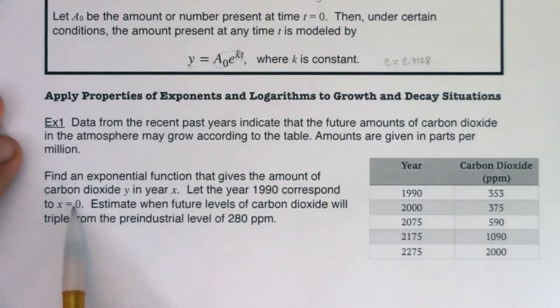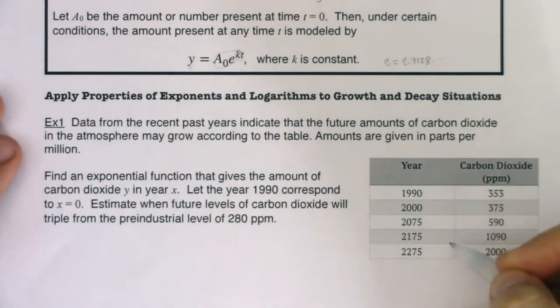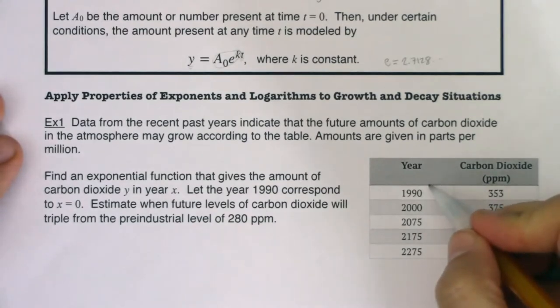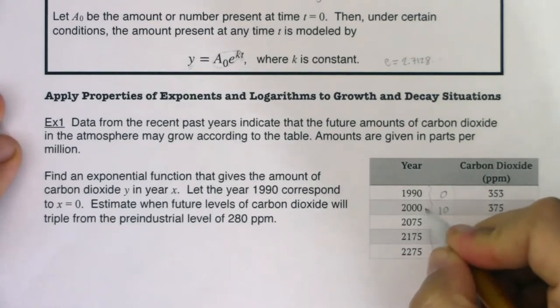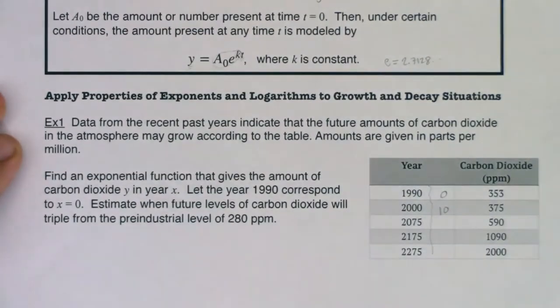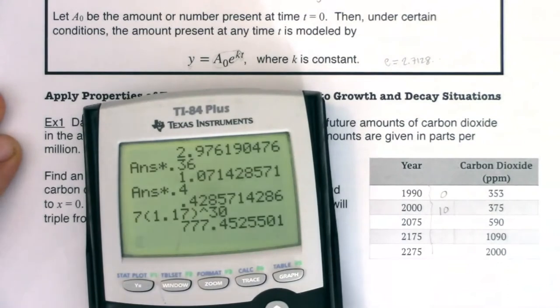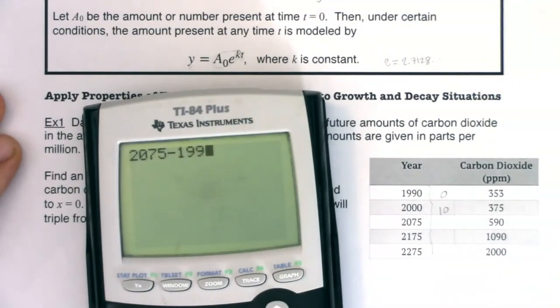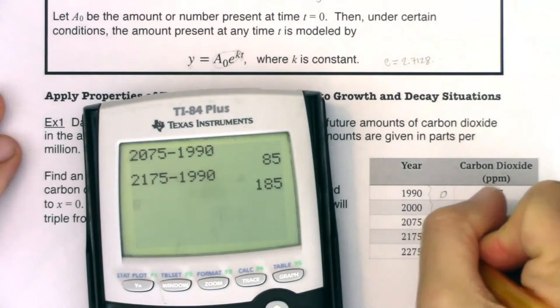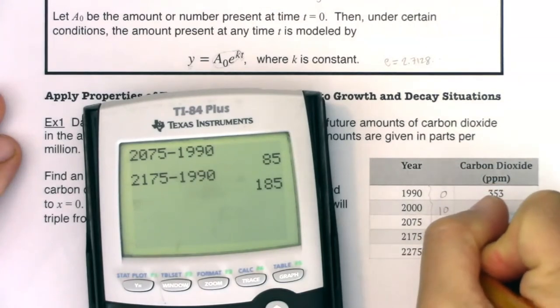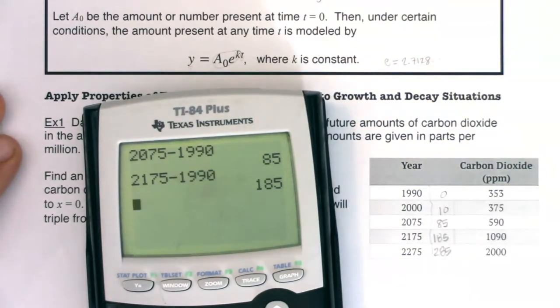I was given a base year. When I'm given a base year, I like to convert all of my years to that base year because it helps me figure out what my x values are. If this is year zero, this is going to be year 10, because 2000 is 10 years after 1990. For the rest, I'm going to go right to my calculator. I'll do 2075 minus my base year, so this was 85 years after 1990. This will be 185, and then 285. Always your current year minus your base year, and that will tell you what your t value is.